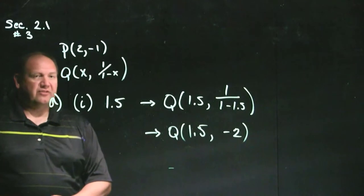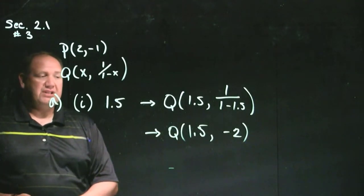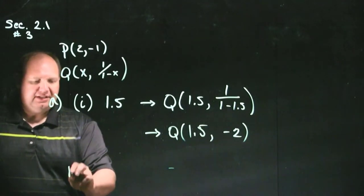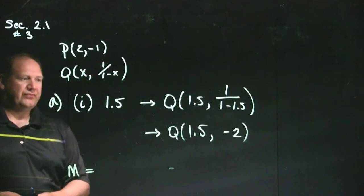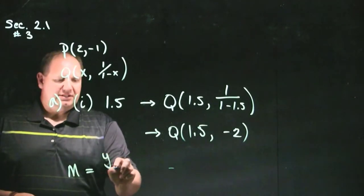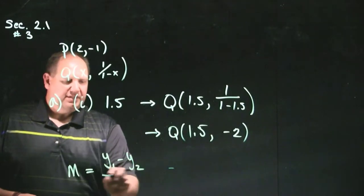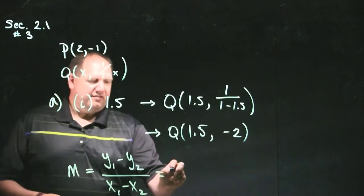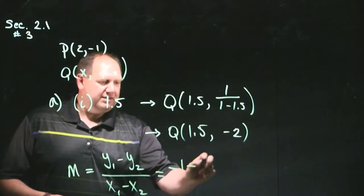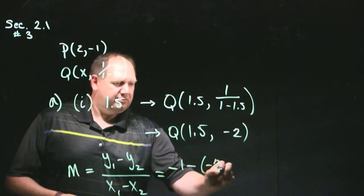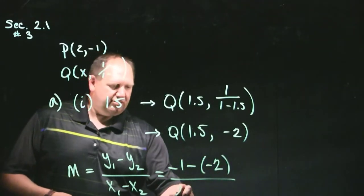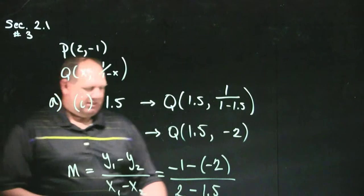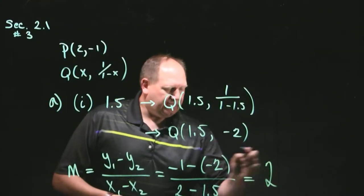In this particular case, we're asked to find the secant line between point p and q. So the slope of that secant line is m equals the rise over run. So y1 minus y2 divided by x1 minus x2. And in this case, we have minus 1 minus minus 2 divided by 2 minus 1.5.